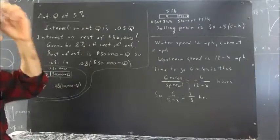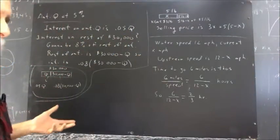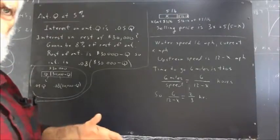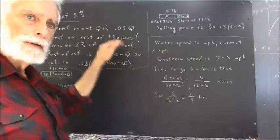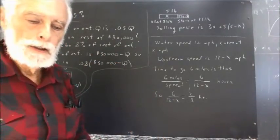Now, you're not just investing the amount Q. You're investing the whole $30,000, but the rest of it is going to be invested at 8%. So how much interest are you going to get on that? You should stop and think about that rather than reading ahead and see if you can think what that quantity would be.